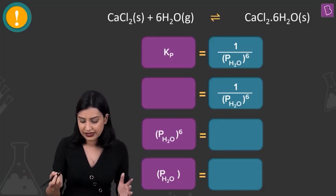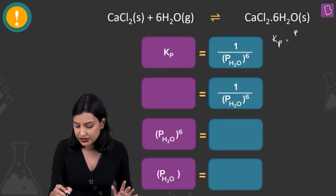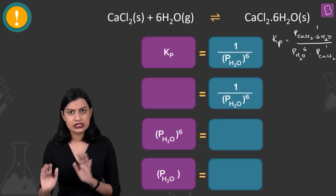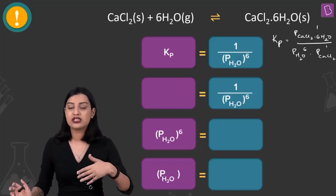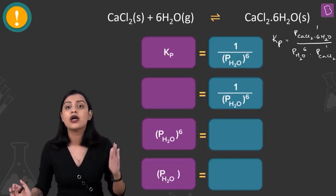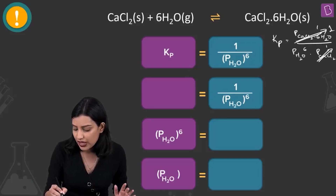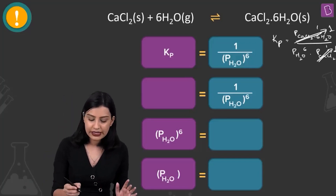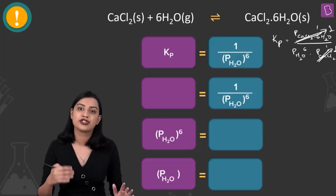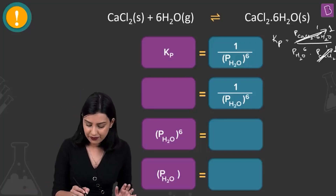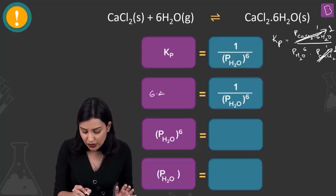Setting up the Kp expression: Kp equals partial pressure of CaCl₂·6H₂O divided by partial pressure of H₂O raised to the power of 6, times partial pressure of CaCl₂. However, CaCl₂·6H₂O and CaCl₂ are both solids, so their terms drop to 1. Therefore Kp simplifies to 1 divided by P(H₂O)⁶.